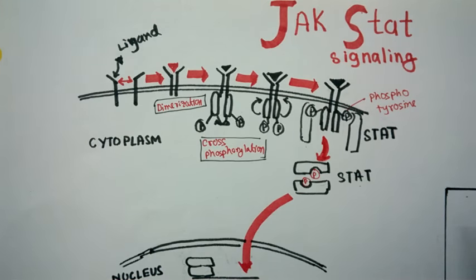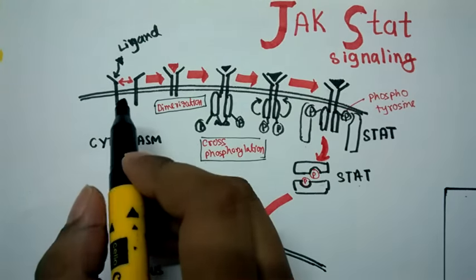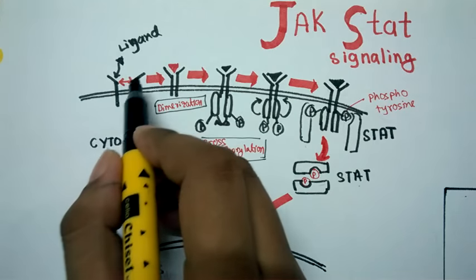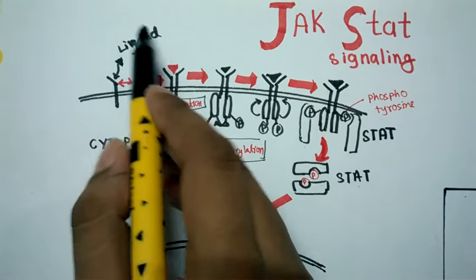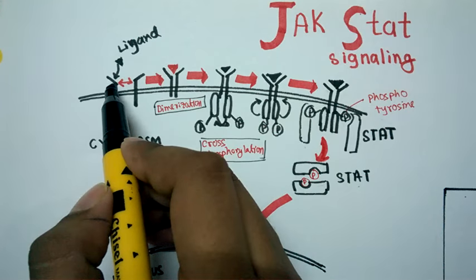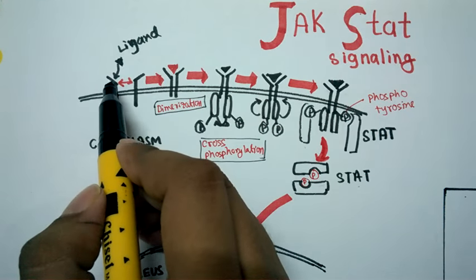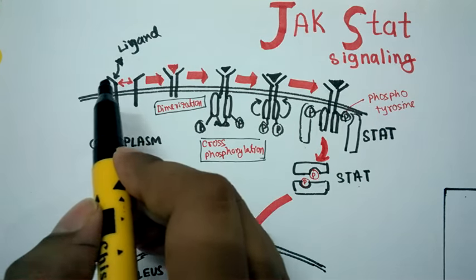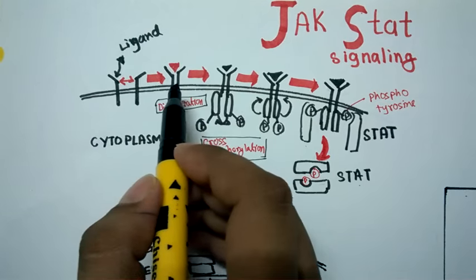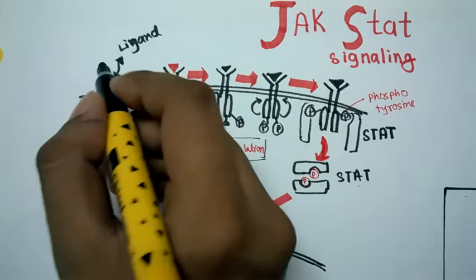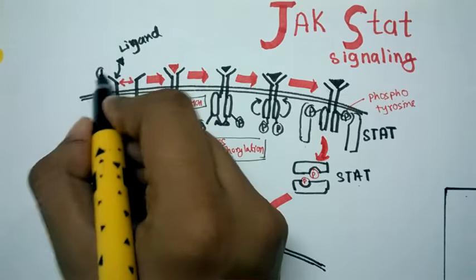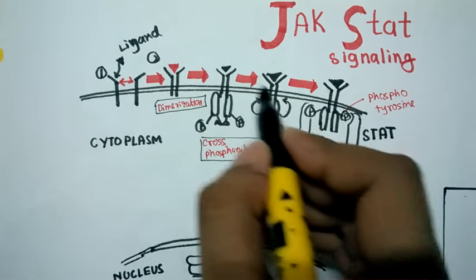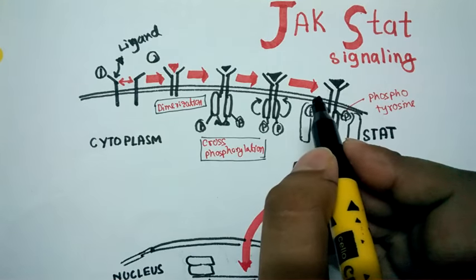Here we see cell surface receptors. A ligand comes and binds to a particular receptor. Upon ligand binding, one receptor helps it to dimerize. You can see it is dimerizing, so basically one receptor becomes dimerized.